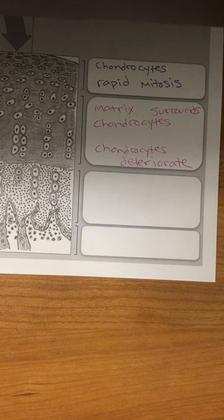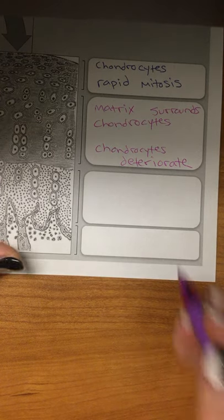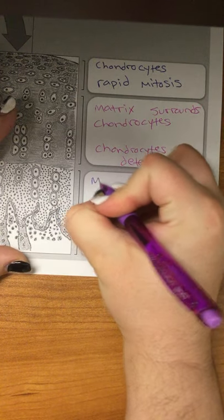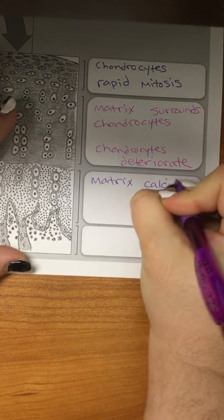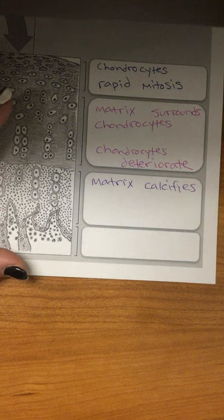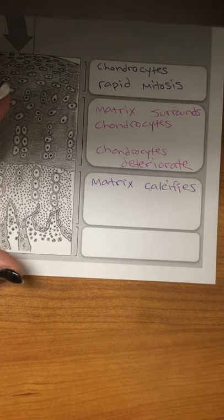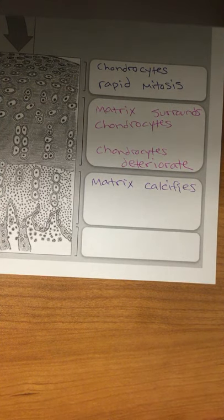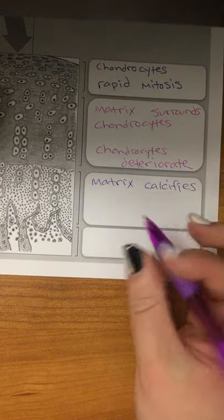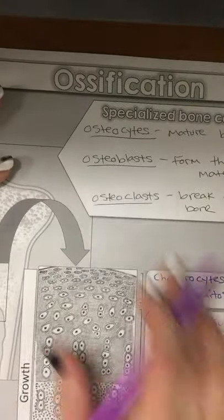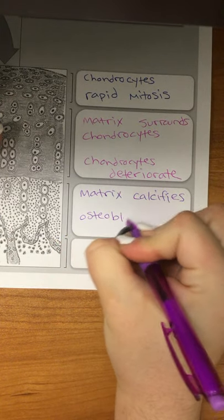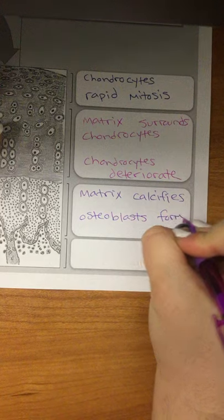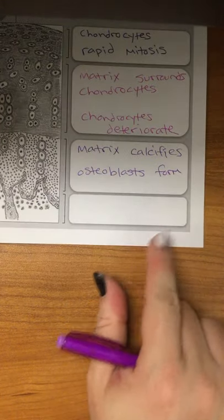They start to deteriorate and go away. Then our matrix is going to continue being made and it's going to start to calcify, which means exactly what you think it would mean. It looks like calcium. Calcifies. And our osteoblasts, which were the ones that are forming, they start showing up here.